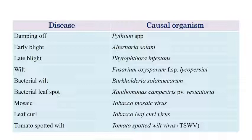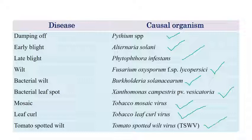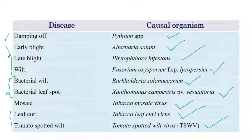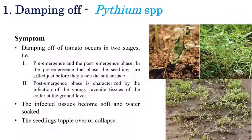The list of important diseases in tomato includes: damping off (caused by Pythium species), early blight (Alternaria solani), late blight (Phytophthora infestans), wilt (Fusarium oxysporum f. sp. lycopersici), bacterial wilt (Burkholderia solanacearum), bacterial leaf spot (Xanthomonas campestris pv. vesicatoria), mosaic (Tobacco Mosaic Virus), leaf curl (Tobacco Leaf Curl Virus), and tomato spotted wilt (Tomato Spotted Wilt Virus). The first four are fungal, the next two bacterial, and the last three are viral diseases.